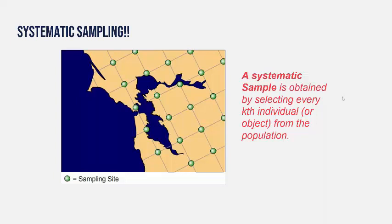Finally there's systematic sampling, which is obtained by selecting every kth individual or object from the population. For the student example, you would line up all the students in the auditorium and select every fifth, sixth, or seventh individual — just as long as it was done in a systematic way.